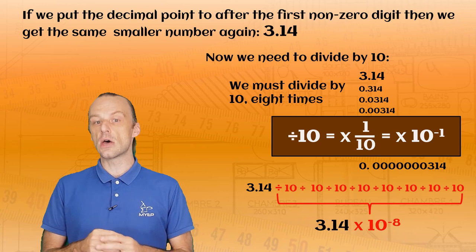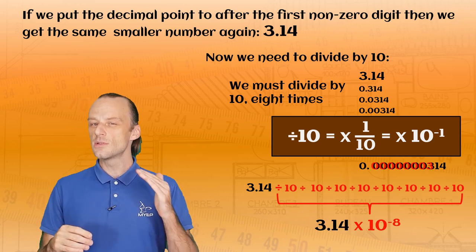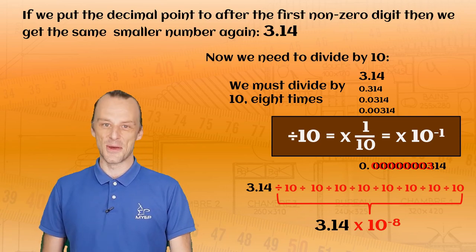Just notice though, there are only seven zeros after the decimal point, because we also need to jump over the three. We'll come back to that in just a moment.